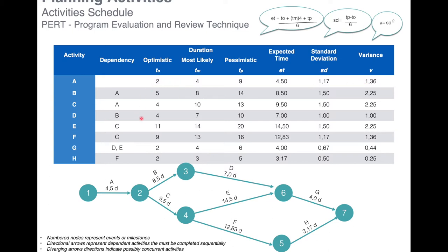We do exactly the same exercise for all activities: most likely, optimistic, pessimistic, expected time, standard deviation, and variance. Activity A has an expected duration of 4.5 days, Activity B is 8.5 days, Activity C is 9.9 days, and so on for all the activities in our project.